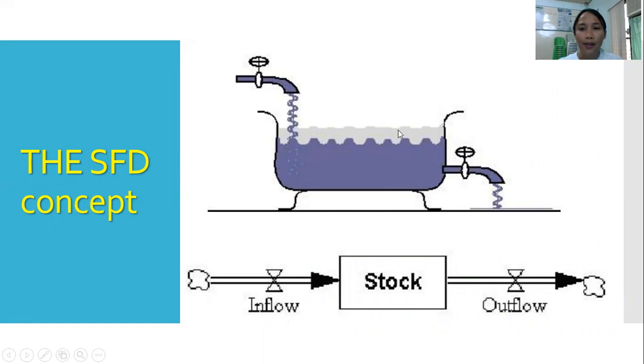The stock and flow diagram concept is like a bathtub. The level of water in this bathtub is regulated by the rate of water through this faucet, which serves as our inflow, and it is also regulated by the rate of water coming out from our drain.